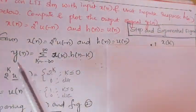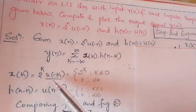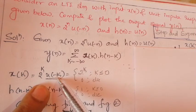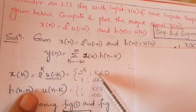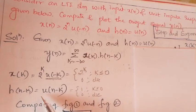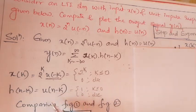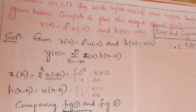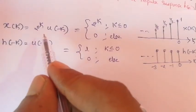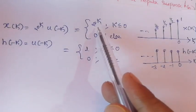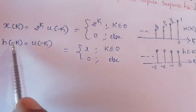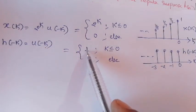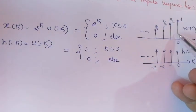In terms of index k: x(k) equals 2 to the power k times u(minus k). Since u(minus k) is the unit step signal with amplitude 1, we can write x(k) equals 2 to the power k when k is less than or equal to zero, else zero. Similarly, h(n minus k) equals u(n minus k), which equals 1 when k is less than or equal to zero and zero otherwise.